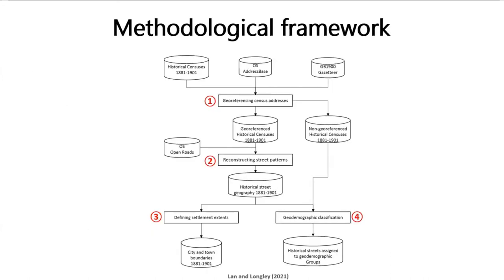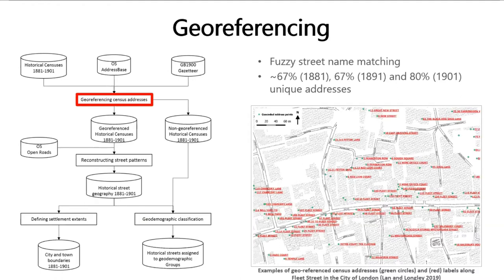This is our data processing workflow. There are mainly four operations in this flow which will be demonstrated in the next few slides. We start from georeferencing the census addresses. This part of work had been introduced in our 2019 DISRAC presentation at Newcastle, as well as a referenced paper. Basically, each historical address is assigned to its exact or most probable location from the address survey address base and the GB19100 gazetteer within the known parish using fuzzy string matching. Eventually, we geocoded around over 70% of the unique addresses on average.